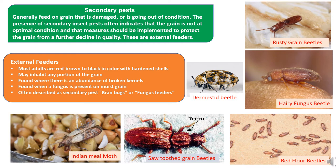Secondary pests are often classified as external feeders. The characteristics of external feeders include: most adults are red-brown to black in color and have hardened cells. These insect pests inhabit any portion of the grain as they feed externally on the outside. External feeders are found predominantly where there is abundance of broken or damaged kernels and presence of fungus under moist grain conditions. They are often described as secondary pests, bran feeders, or fungus feeders.